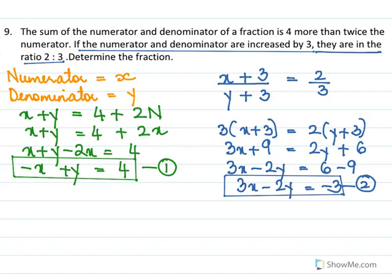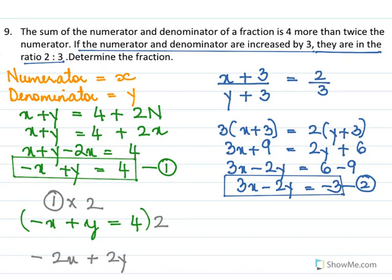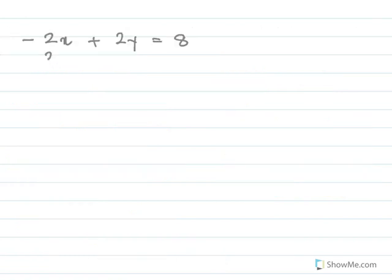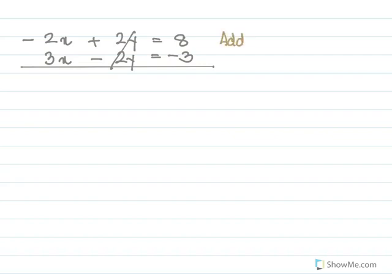Multiply equation 1 by 2: minus x plus y equal to 4 becomes minus 2x plus 2y equal to 8 — equation 3. Adding equations 2 and 3 (no sign change needed): the 2y terms cancel, giving x equal to 5.